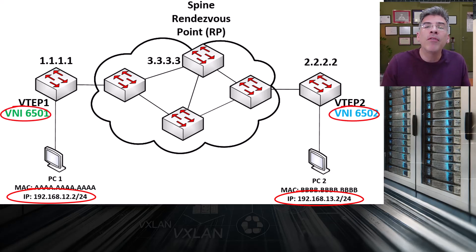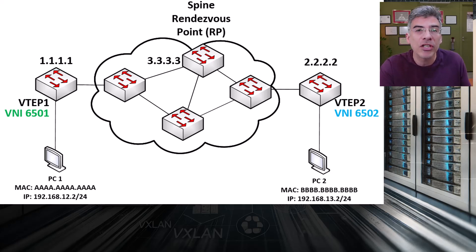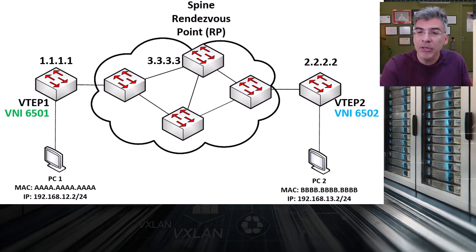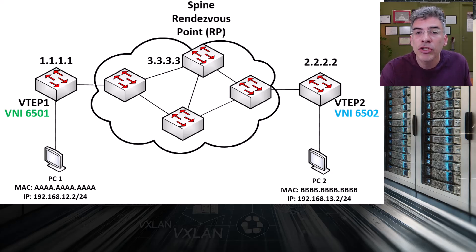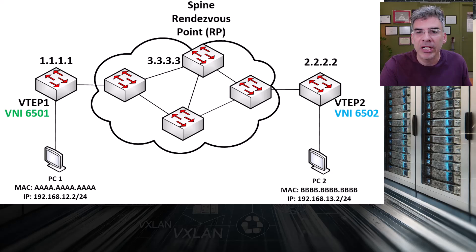We've gone over the mechanisms with which such a topology functions several videos ago. However, in this video, we'll actually see the configurations on the Cisco Nexus switches. This configuration will be somewhat similar to the one we did with the Layer 2 communication, so many of the same concepts will apply, but we'll see at what point these differ in order to enable routing and Layer 3 operations.